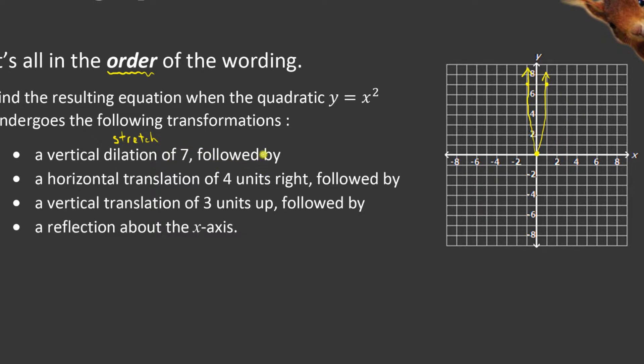Followed by, so that means the next thing. So what we have is we have a value of 7. That's what we know so far. A horizontal translation of 4 units to the right. So if it's a horizontal translation of 4 units to the right, that means x minus 4 because of the x minus h.